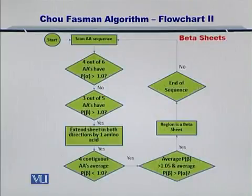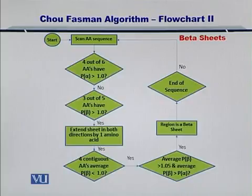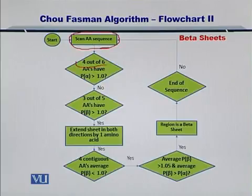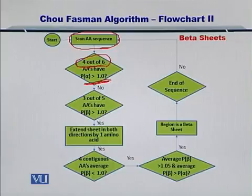But before we get to that, let me review the beta sheets and how the flow chart for beta sheet actually worked. In this flow chart, as you can see, we started by scanning the amino acid sequence and then we saw if 4 out of 6 amino acids had a propensity for forming a beta sheet. This was necessary because alpha helices require at least 4 amino acids for making one full turn in the alpha helix.